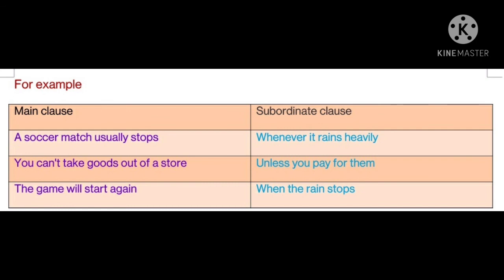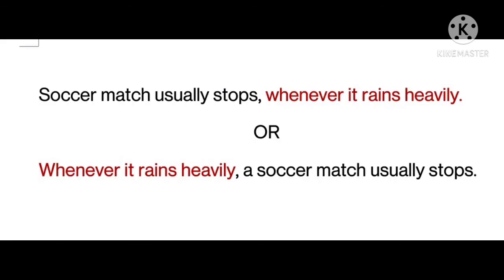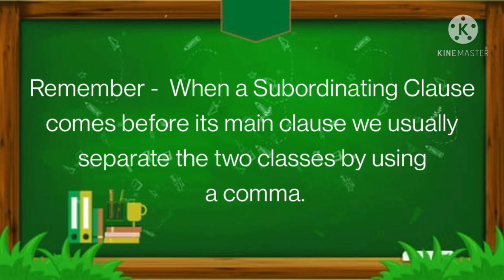The game will start again when the rain stops. The main clause 'the game will start again' makes sense by itself. However, 'when the rain stops' is a subordinating clause and doesn't. We can put a subordinating clause before or after a main clause. For example: 'A soccer match usually stops whenever it rains heavily', or we can write: 'Whenever it rains heavily, a soccer match usually stops.' Remember, when a subordinating clause comes before its main clause, we usually separate the two clauses by using a comma.